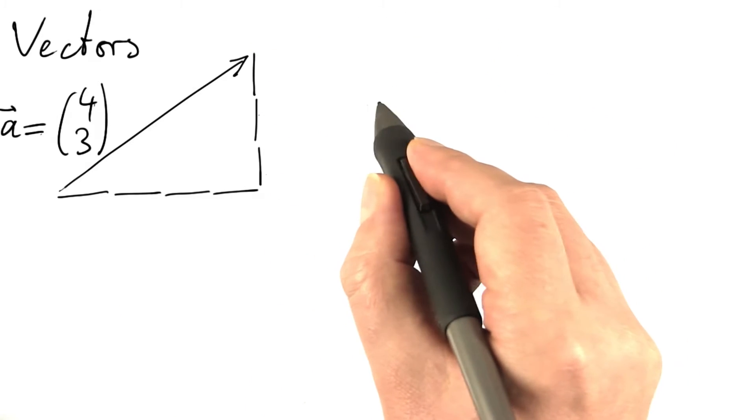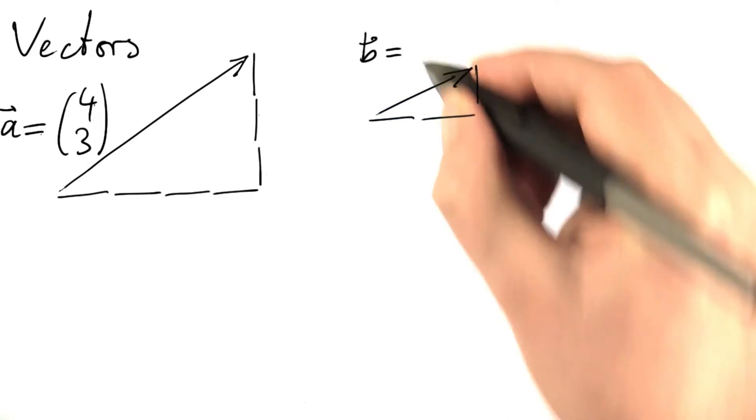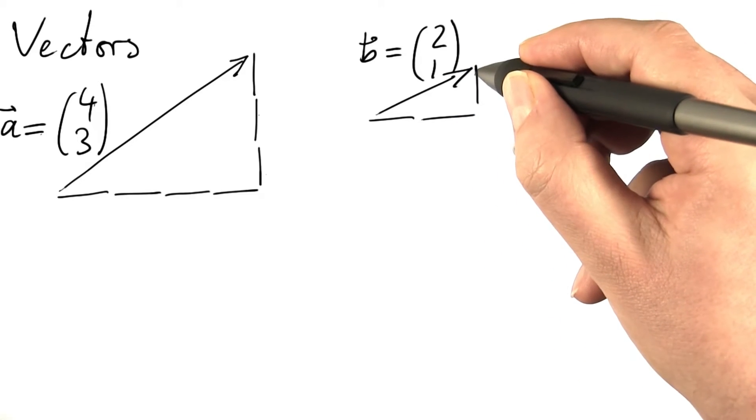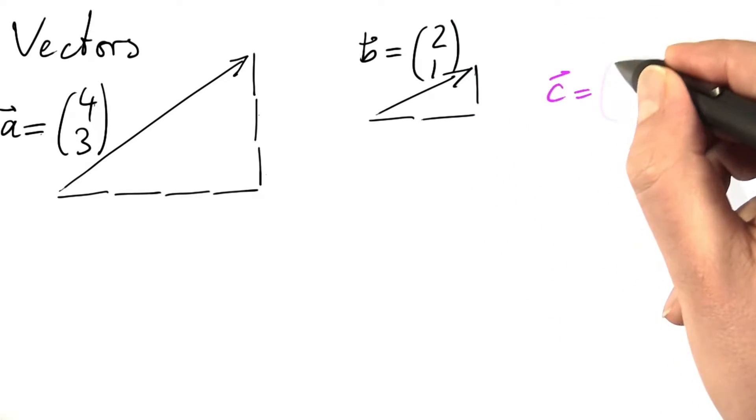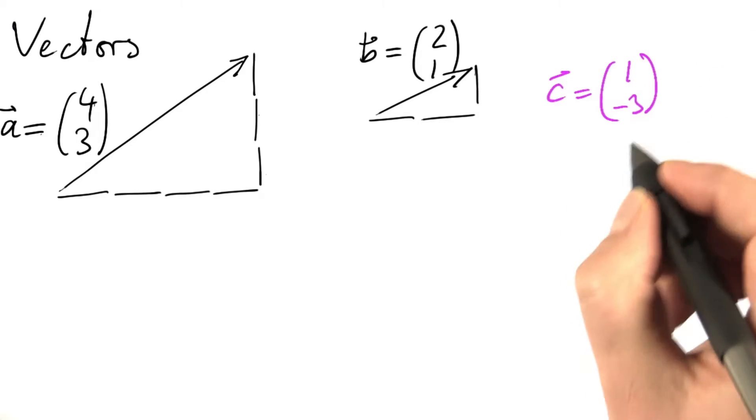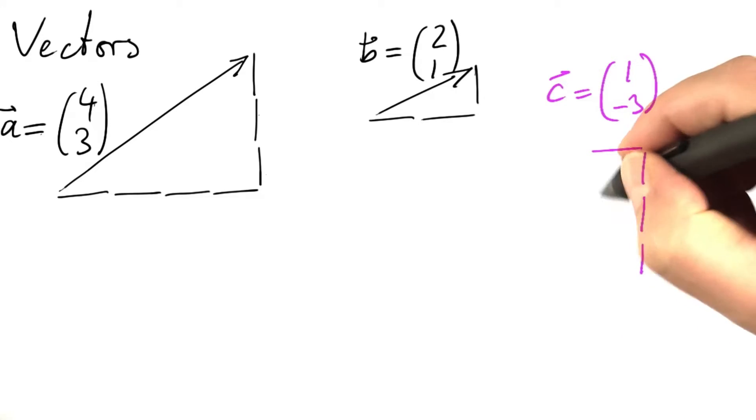Let's look at a second vector. If we call this vector b, that would be 2, 1, x component 2, y component 1. Let's have a third vector that's called c, and c should be 1, minus 3. c goes right by one unit and goes down by three units.